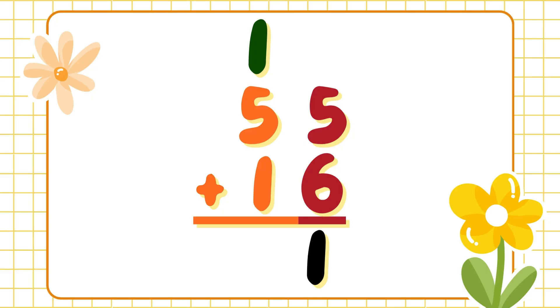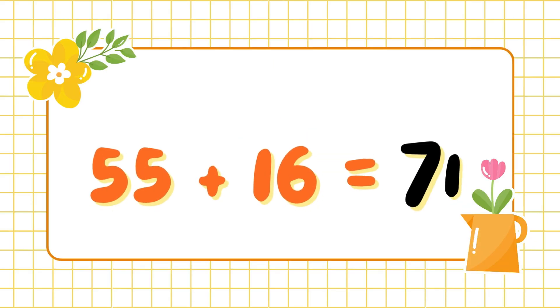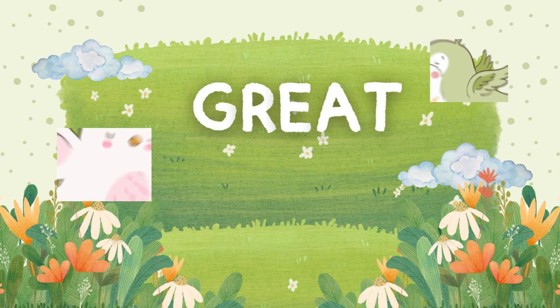Now, what's six plus one? That makes seven. Seventy-one. Fifty-five plus sixteen equals seventy-one. Yay!